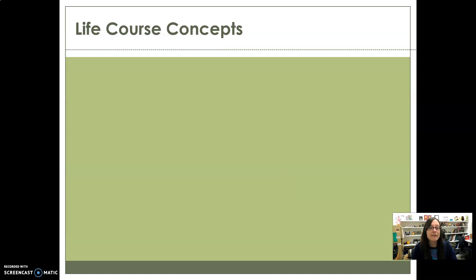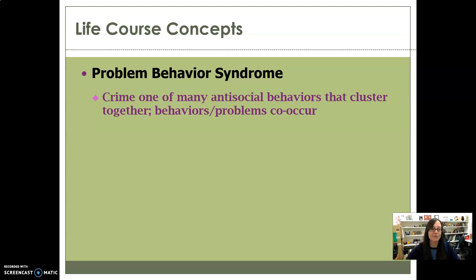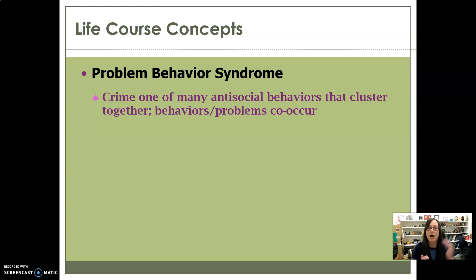Another life course concept is what's called problem behavior syndrome — the idea that crime is one of many antisocial behaviors that cluster together. Problem behaviors tend to co-occur. The more problems in somebody's life, the more additional problems are attracted to that person. These would be things like family dysfunction, sexual and physical abuse, substance abuse, smoking, precocious sexuality, early pregnancy, educational underachievement, suicide attempts, sensation seeking, and unemployment.